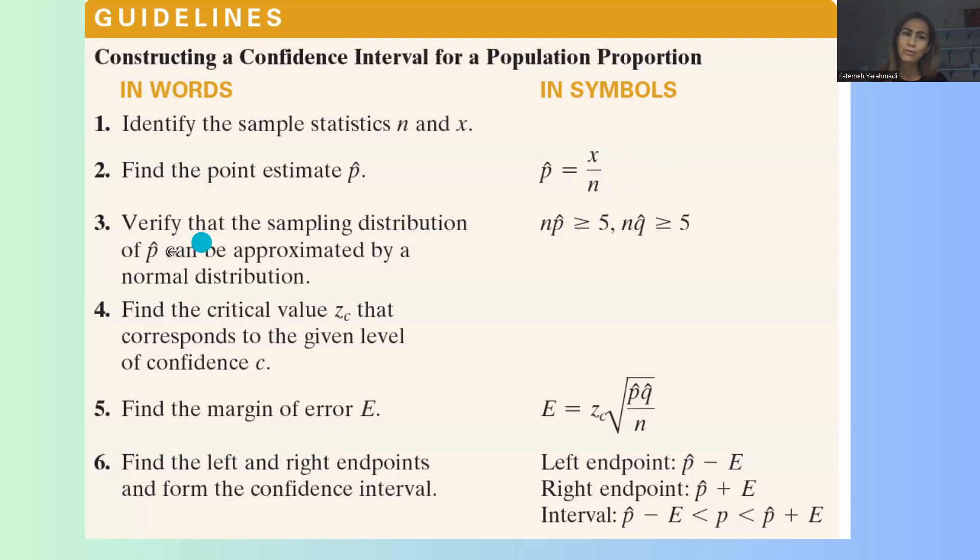Now you need to verify that if you can use the sampling distribution for p-hat and use a normal distribution. How to do that? You need to check to see if the multiplication between the sample size and p-hat is larger than or equal to 5, and also n times q-hat is larger than or equal to 5.